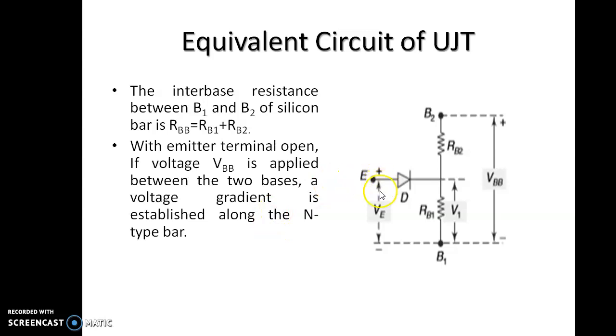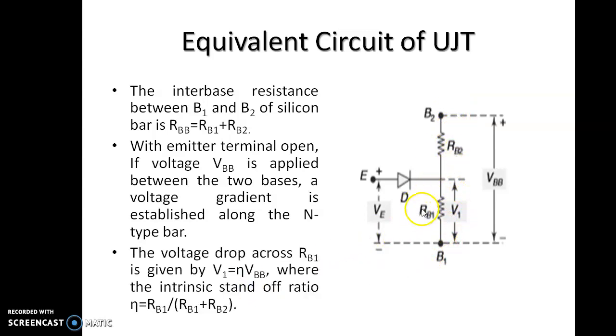With emitter terminal open, if voltage VBB is applied between the two bases, a voltage gradient is established along the N-type bar. The voltage drop across RB1 is V1 which is equal to Eta into VBB, where Eta is the intrinsic standoff ratio given by RB1 by RB1 plus RB2. The typical value of the intrinsic standoff ratio is 0.56 to 0.75.